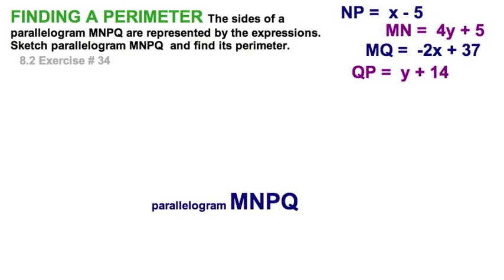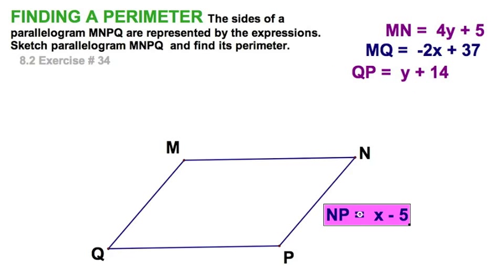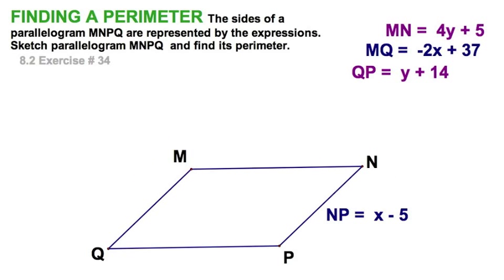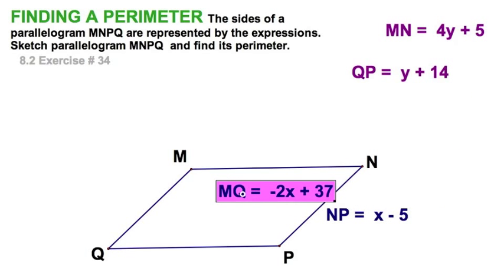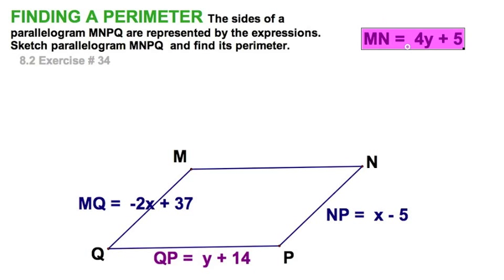Let's find the perimeter of this parallelogram. I suppose we first need to sketch one. There you go. I went from a text description into a picture. Now I can see it. I've got the vertices in the right order. Now I can take these variable expressions and assign them to the right position. Now remember, I don't really know what shape this is, but I just know it's a parallelogram. And I know now the relative position. NP is opposite MQ. And QP is down here, opposite MN.